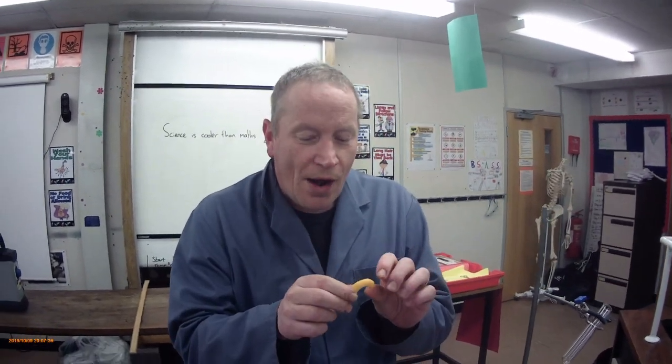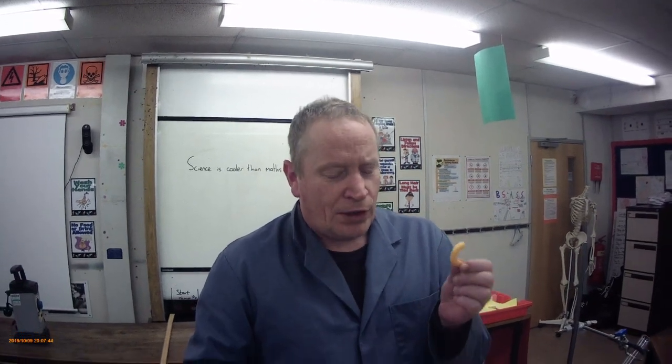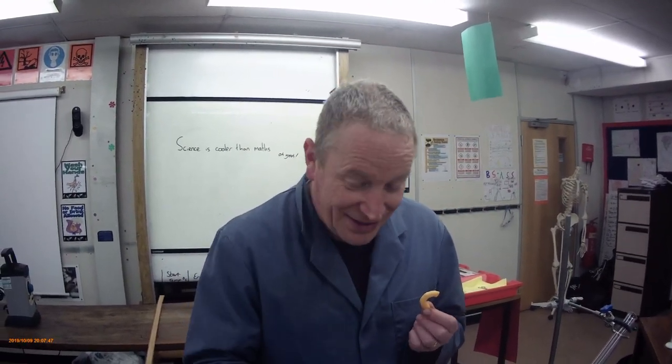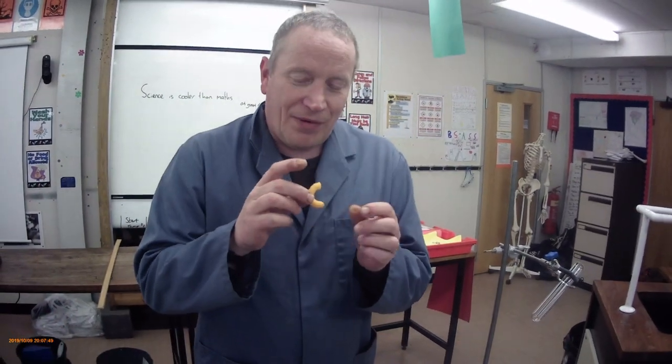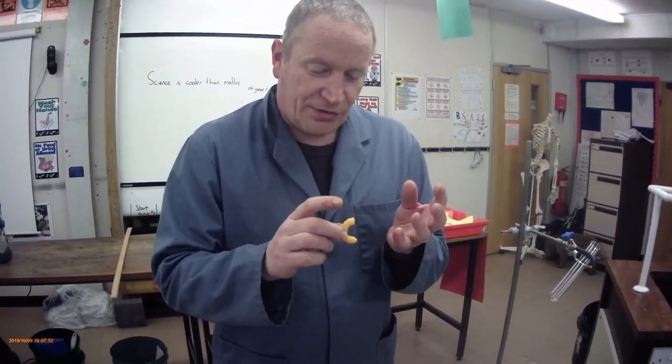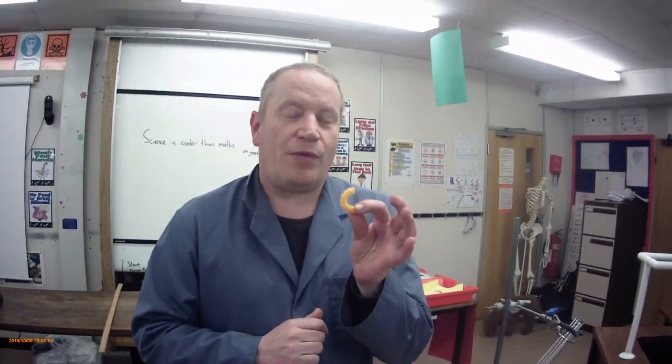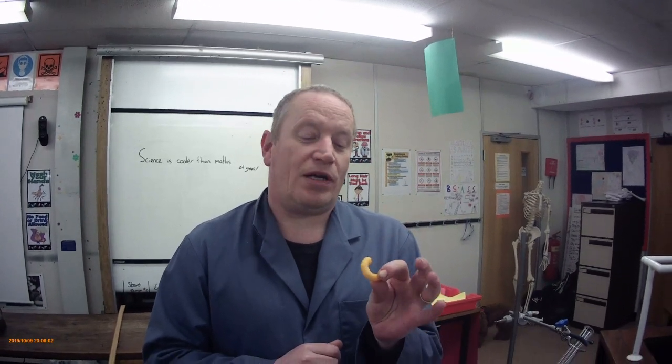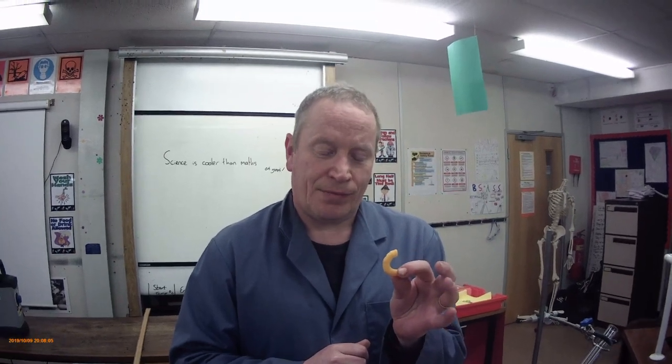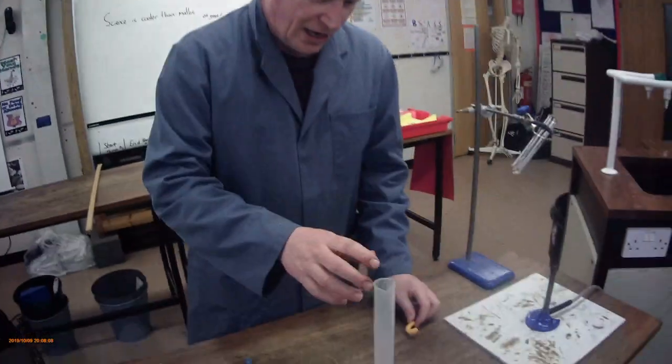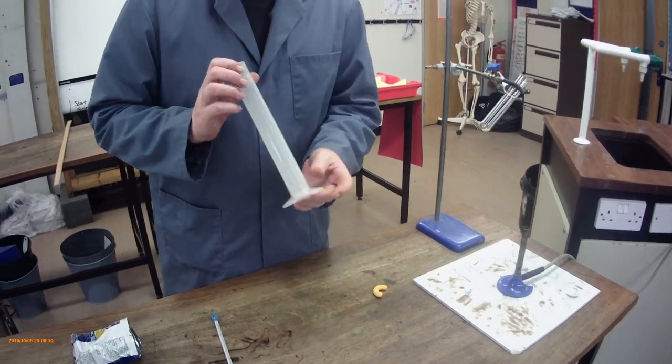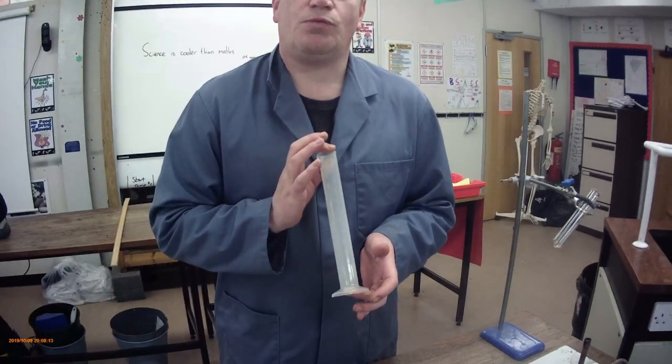If we heat the water we can work out how much the temperature has gone up and from that we can work out how much energy was in one tiny little Wotsit. We're going to use this one because it's got a lovely letter. We're going to set light to it and find out how much energy is released, then work out how much energy per tiny little crisp.